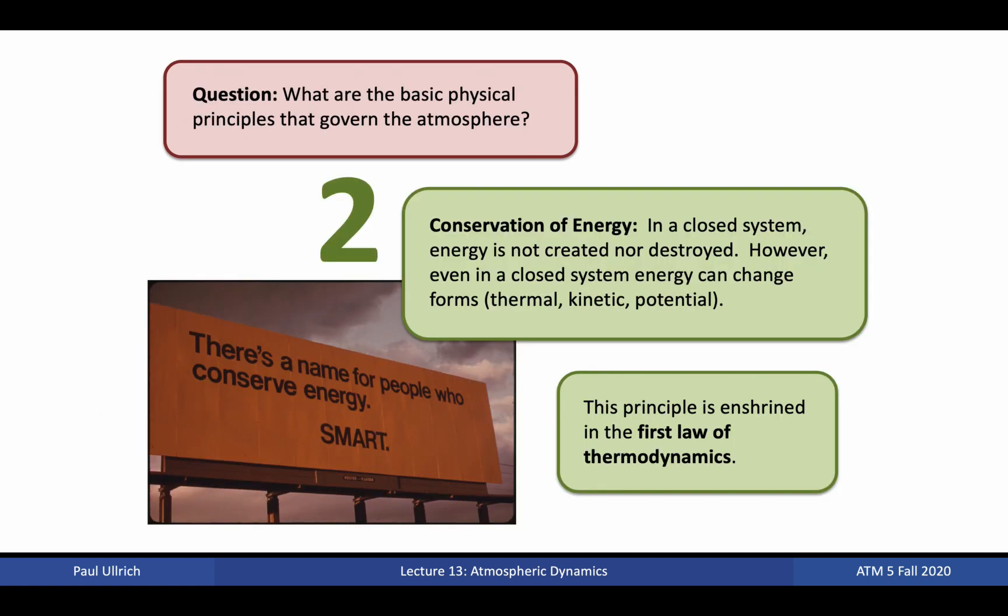The second physical principle guiding atmospheric dynamics is conservation of energy. As discussed before, energy can take many forms, including thermal energy, that is, energy from motion of molecules on small scales. Kinetic energy, such as energy due to bulk motion. Or potential energy, that is, energy put into an object by lifting it up. In a closed system, energy cannot be created or destroyed, but can change forms. The Earth's atmosphere is not exactly a closed system in this sense, as it gains energy from solar radiation and loses it through terrestrial radiation. However, when the Earth is in a state of energy balance, gains equal losses and the total energy stays the same. The motion of air parcels can be understood through the transformation of energy between forms. This is enshrined in the first law of thermodynamics.